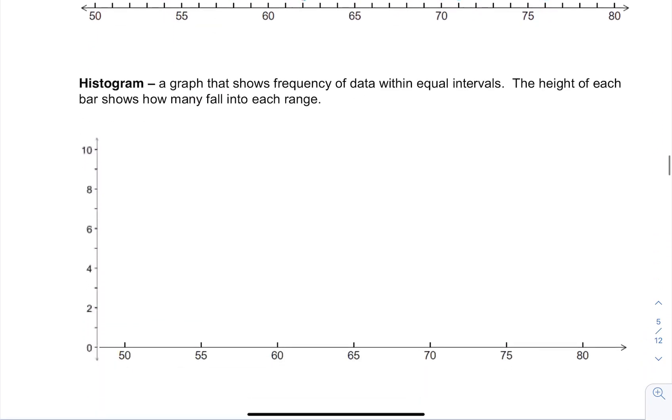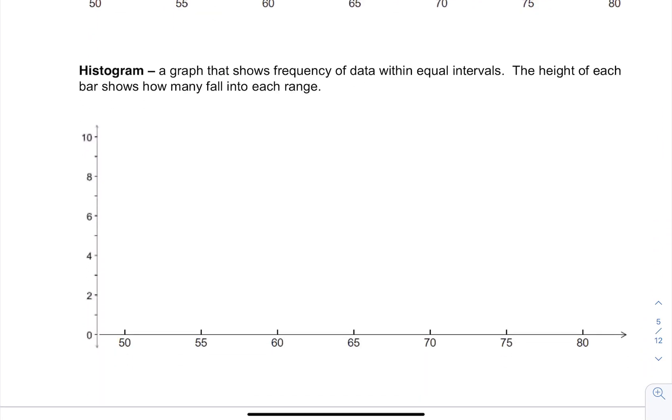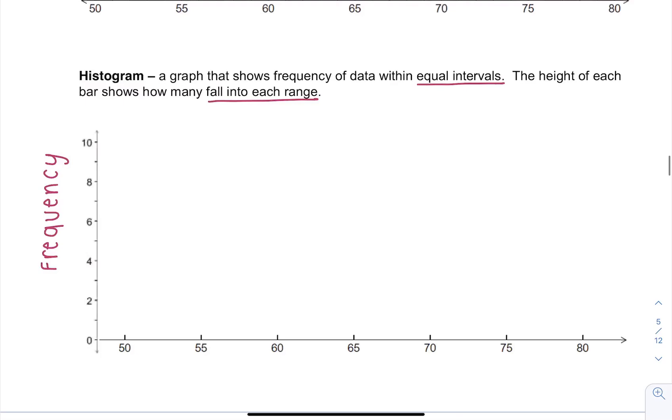Now a histogram is a graph that shows the frequency of data within equal intervals. So the height of each bar shows how many fall into that range. So our height shows our frequency, frequency. And let's make this for the same graph we just did, which was about speed.